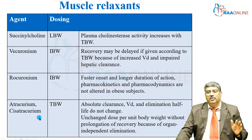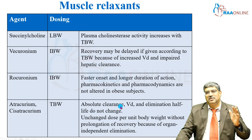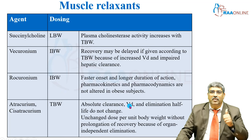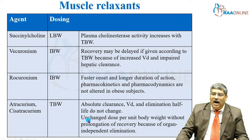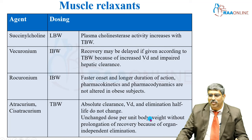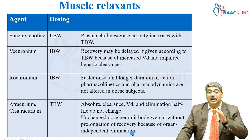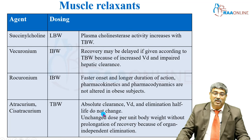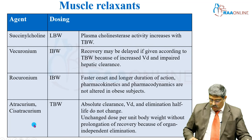Atracurium and cisatracurium: use total body weight. Absolute clearance, volume of distribution, and elimination half-life do not change. There is unchanged use per unit body weight without prolongation of recovery because of organ-independent elimination. So either rocuronium or atracurium will be ideal to use in obesity.